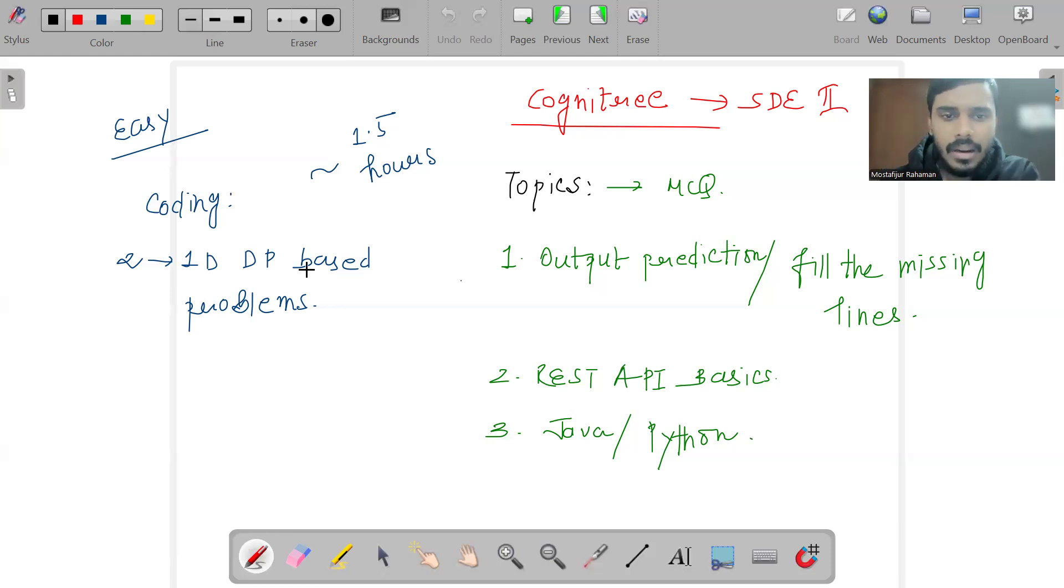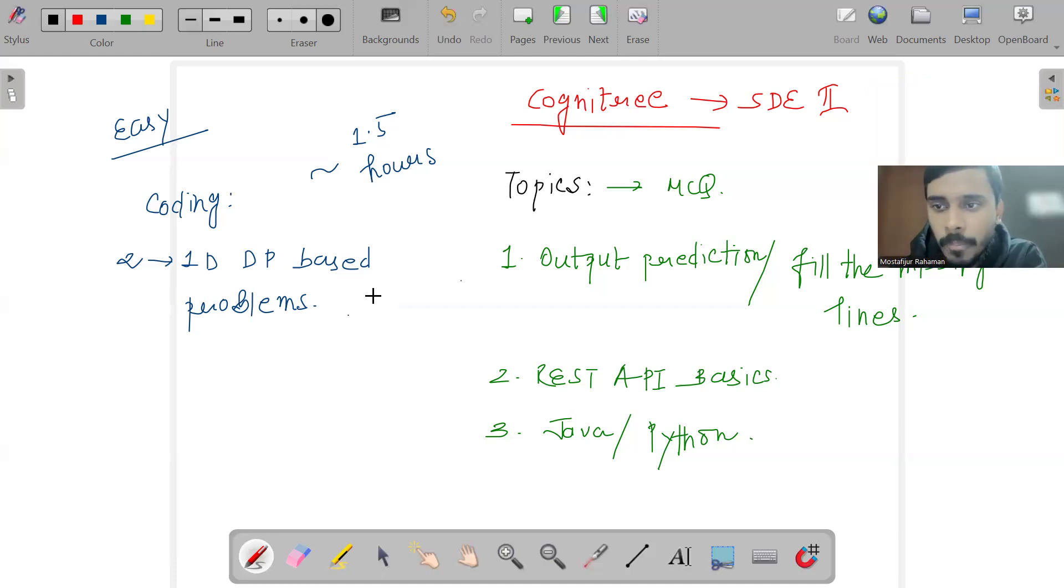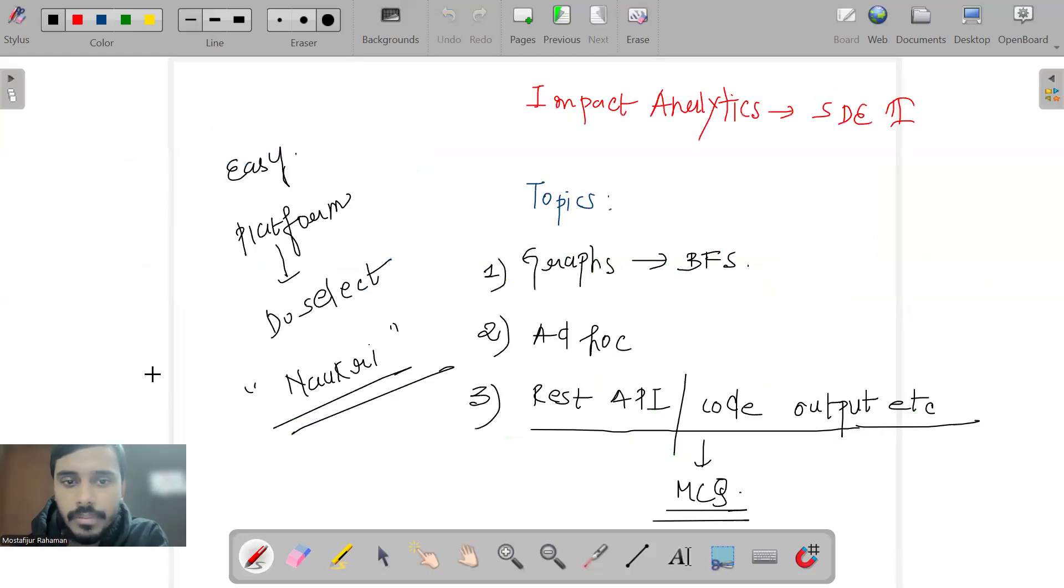Each coding section they gave was 30 minutes, and I just required 10 minutes for each problem. Going forward, I gave the exam for Impact Analytics - this was for the SDE2 role corresponding to a Python developer position. The platform they utilized was DoSelect, and they connected to me via the Naukri platform.